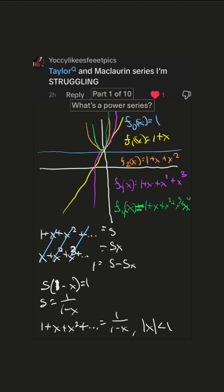So it's only when x is between negative one and one. That's called the interval of convergence. Outside of that interval, it diverges.